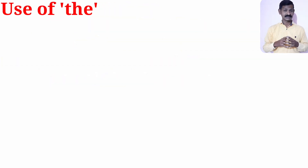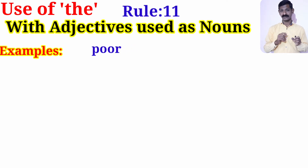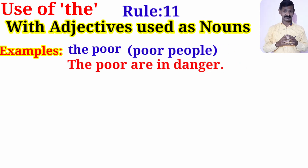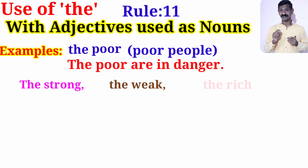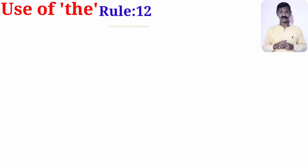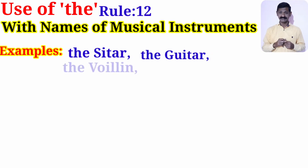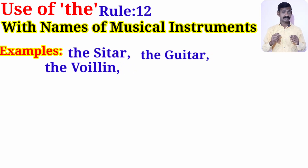We use article 'the' with adjectives used as nouns. For example, 'the poor' gives the meaning 'poor people'. Similarly: the strong, the weak, the rich. We also use article 'the' with the names of musical instruments — for example: the sitar, the guitar, the violin, the piano, the veena, and so on.